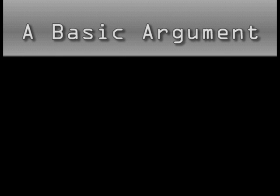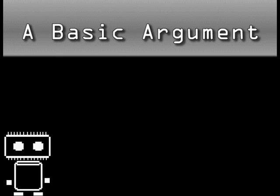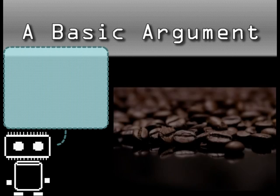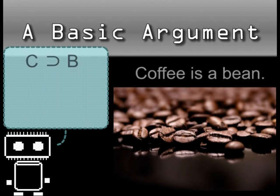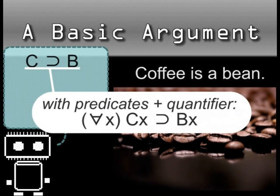Right now I want to convince you that coffee is a food, not a beverage. I'll start with some sentences we both accept. Coffee is a bean — remember your logic here, I'm saying that for all x, if x is coffee, then x is a bean.